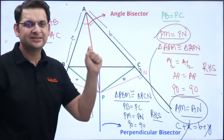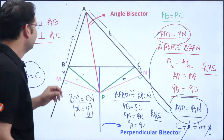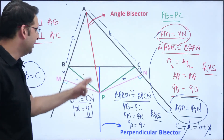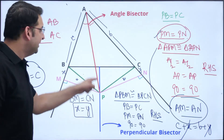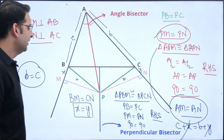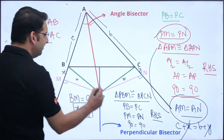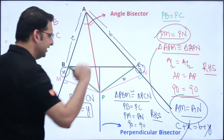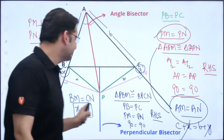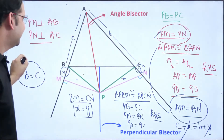Let me repeat this again. The internal angle bisector and the perpendicular bisector of BC meet at point P. Since P lies on the perpendicular bisector, PB equals PC. Since P lies on the angle bisector, PM equals PN. There are two sets of congruent triangles: PBM and PCN are congruent, meaning X equals Y; and APM and APN are congruent, meaning C plus X equals B plus Y. Since X equals Y, B equals C — the triangles are isosceles.